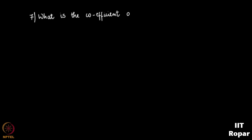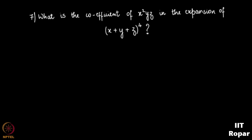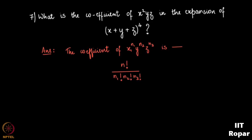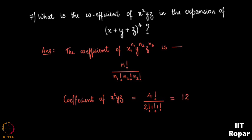Next question: what is the coefficient of x²yz in the expansion of (x + y + z)^4? Here we apply multinomial theorem. The coefficient of x^n1·y^n2·z^n3 is n!/(n1!·n2!·n3!). So the coefficient of x²yz is 4!/(2!·1!·1!) = 12.